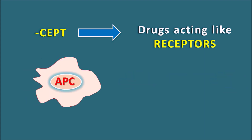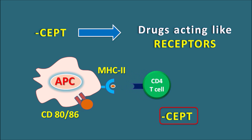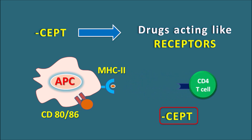Normally drugs bind to receptors, but here the drug itself acts like a receptor on which ligands can bind. In the immune response, antigen presenting cells identify the antigen and express MHC2 molecules, which present the antigen to be recognized by T cells. CD4 T cells bind to this antigen through MHC2 molecules to stimulate the immune response. This immune response requires co-stimulation carried by CD80 or CD86 cells, which can be blocked by a drug having the suffix '-cept' — acting as a false receptor — thereby inhibiting co-stimulation and the immune response.